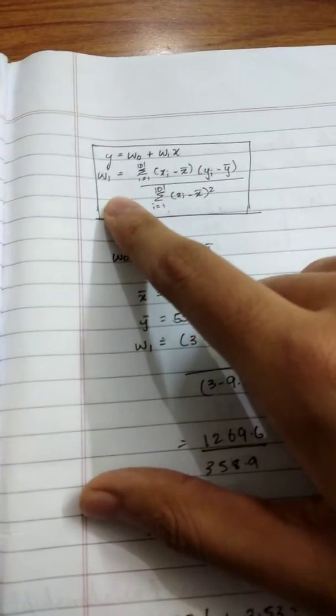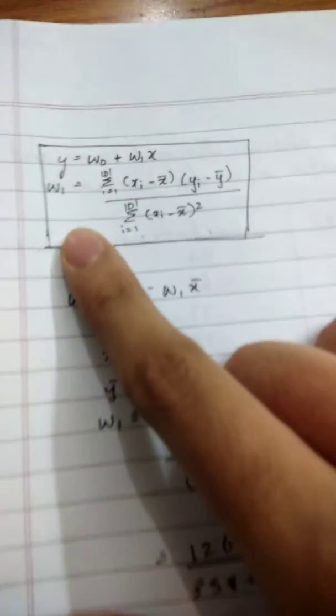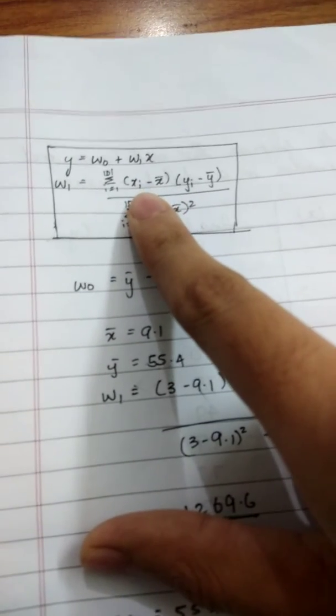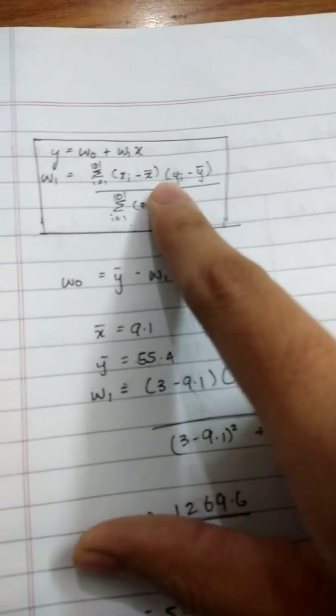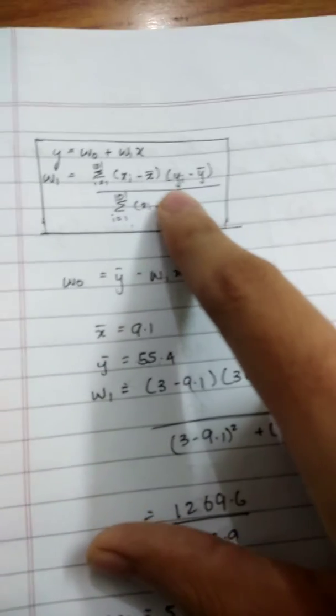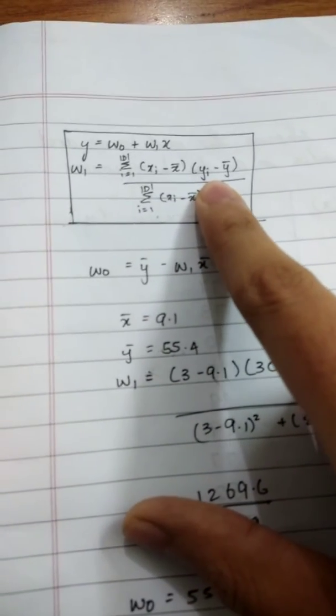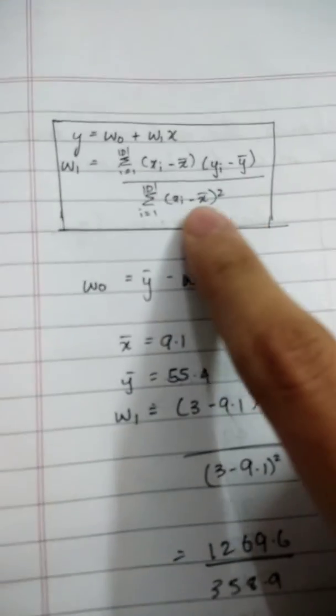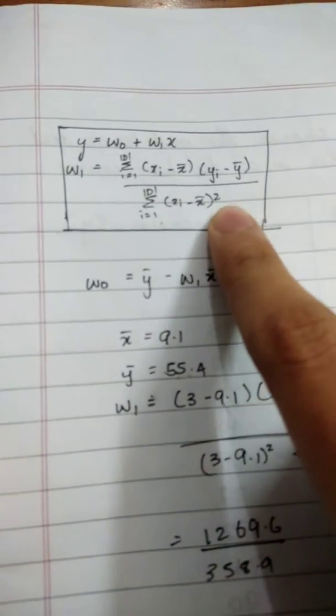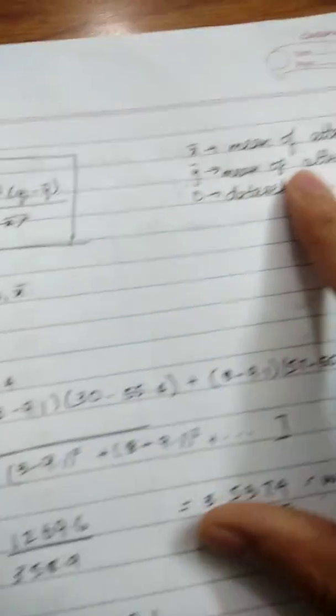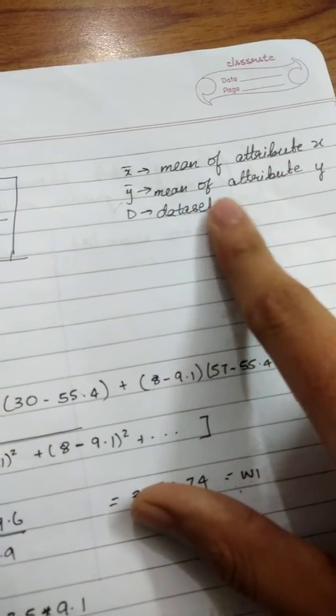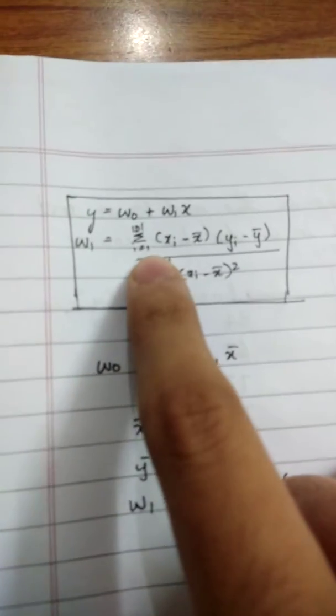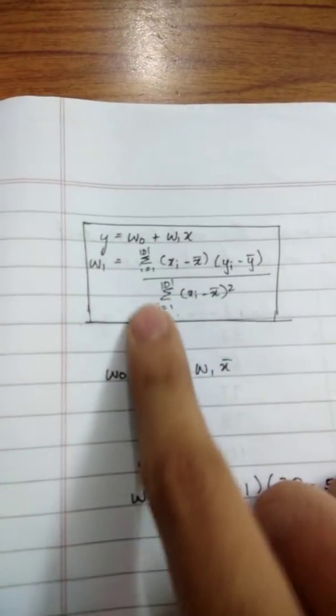The second formula is to find W₁, where W₁ equals the summation of (Xᵢ minus X̄) times (Yᵢ minus Ȳ) divided by (Xᵢ minus X̄) squared. X̄ is the mean of predictor attributes, Ȳ is the mean of response attribute Y, and D is the dataset. You need D because you're iterating from i equals 1 to D.